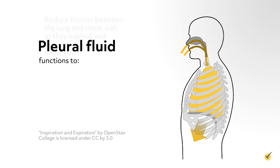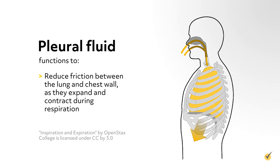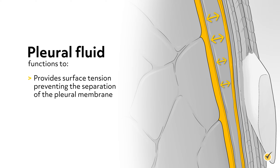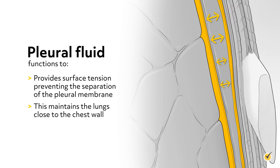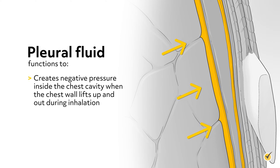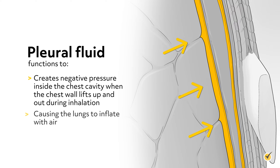Pleural fluid functions to reduce friction between the lung and chest wall as they expand and contract during respiration. It provides surface tension, preventing the separation of the pleural membranes. This maintains the lungs close to the chest wall and creates negative pressure inside the chest cavity when the chest wall lifts up and out during inhalation, causing the lungs to inflate with air.